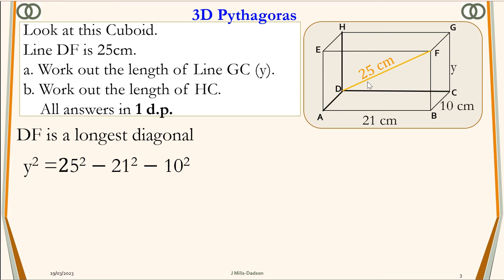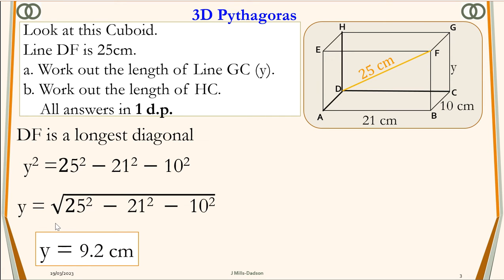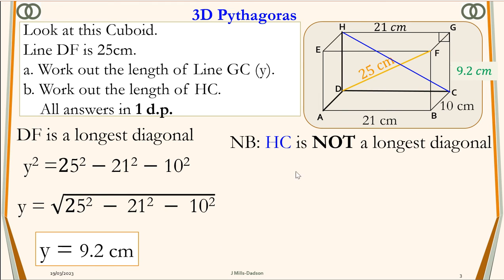So to work this out, you find the square root on both sides and y is 9.2 cm. Now knowing that y is 9.2 cm, we can now work out HC.